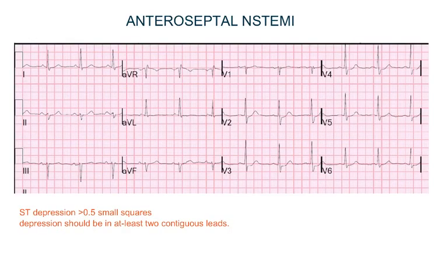To diagnose ST depression MI, the depression should be more than 0.5 small squares and should be in at least two contiguous leads. For example, in this ECG the depression is in lead V2, V3, and V4, so this is anteroseptal NSTEMI.